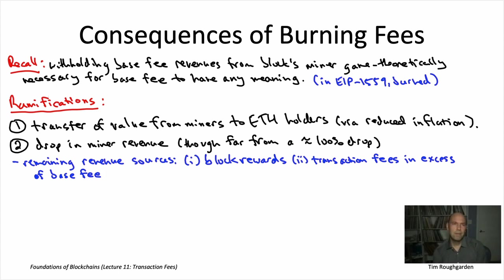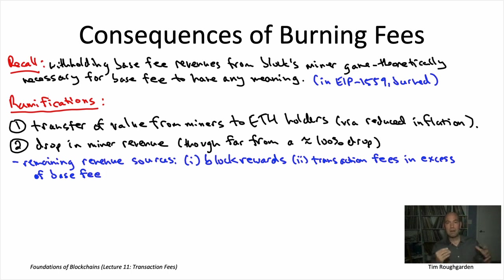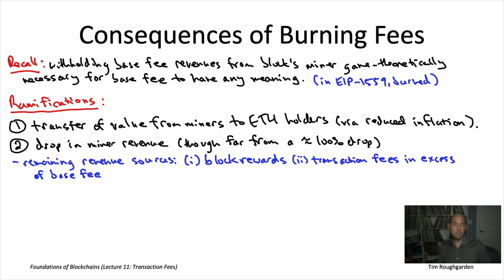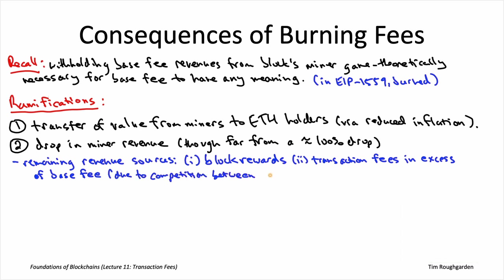Why would any user bid strictly more than the base fee — paying more than the minimum required? First, there's the regime where the current base fee is excessively low, meaning the miner won't have room even in a double-flow block to accommodate all transactions bidding at or above the base fee. For example, after a sudden NFT drop with very high demand, you'd have to compete with other transactions for inclusion, just as one used to in a first price auction — so bids potentially significantly higher than the base fee are expected.